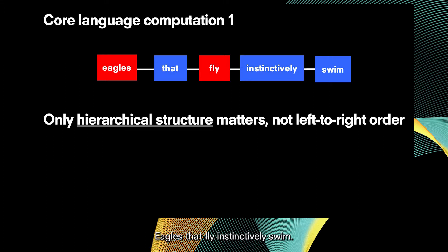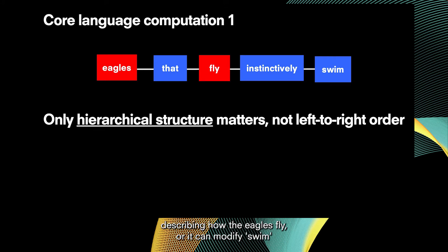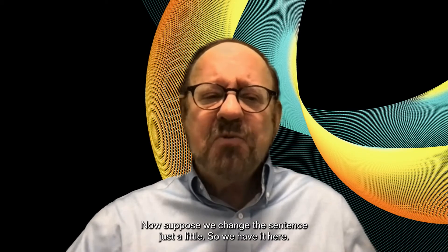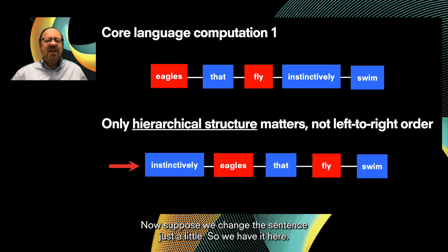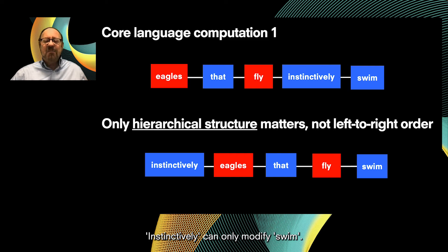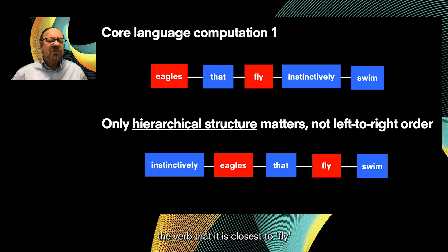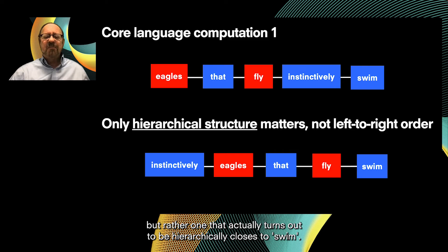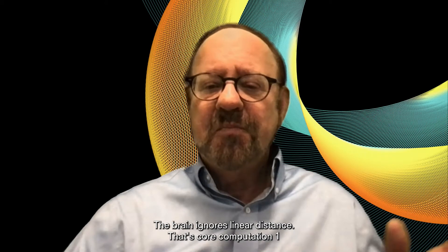Consider one final example: 'Eagles that fly instinctively swim.' This sentence is ambiguous — the adverb 'instinctively' can modify either 'fly' or 'swim.' If we move 'instinctively' to the front, the sentence is no longer ambiguous: it can only modify 'swim.' This shows that 'instinctively' does not modify the verb it is linearly closest to — 'fly' — but rather the one that is hierarchically closest: 'swim.' The brain ignores linear distance. That's core computation one.